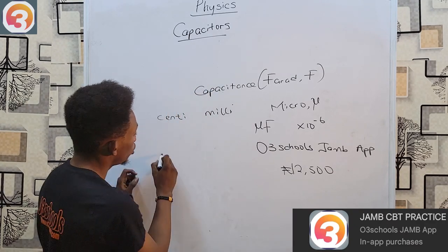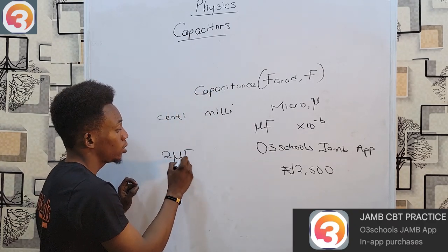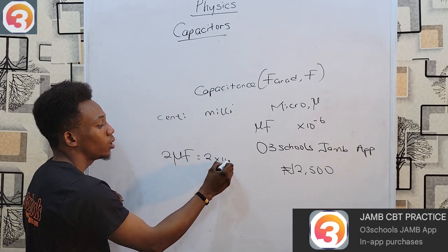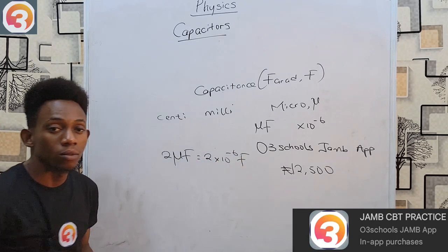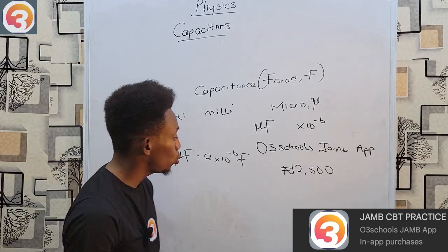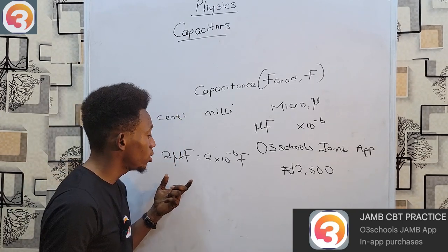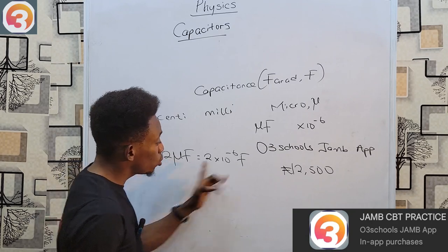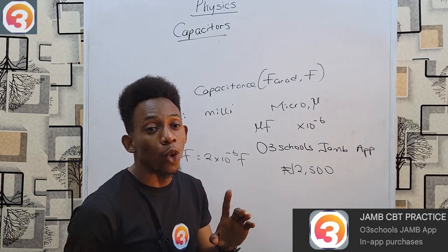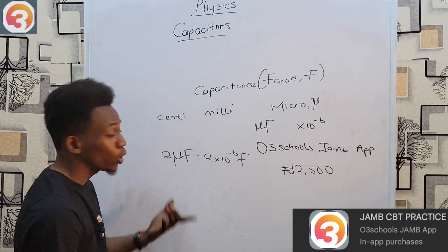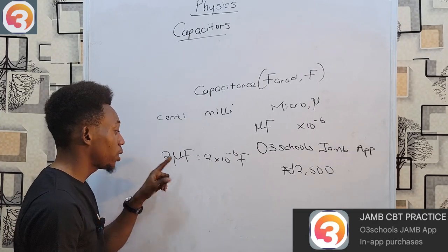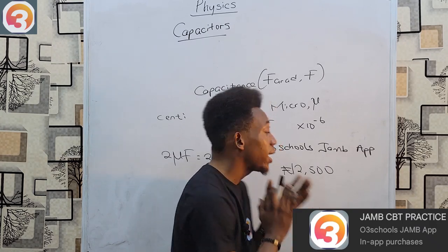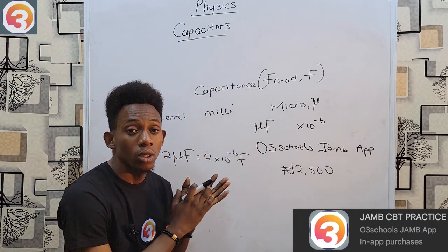That means if you see 2 microfarad, what it is actually representing is 2 × 10⁻⁶ farad. So if you have a calculation involving capacitance, do not forget the micro — don't just solve with 2 and expect to get the correct answer unless your answer is also represented in micro form. Always watch out for that; do not neglect the micro.